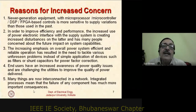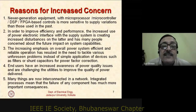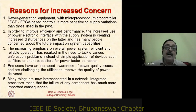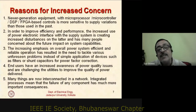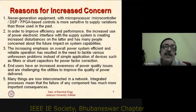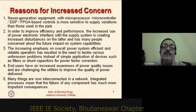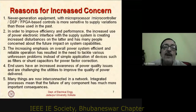The increased use of power electronic interfaces with the supply system is creating increased disturbances on the latter. For example, rather than running a motor at constant speed with a gear arrangement, we now use variable speed drives — achieving the goal but creating disturbances. Classically, power factor correction involved connecting capacitor banks, but today there are many problems with simply connecting capacitors to the line.